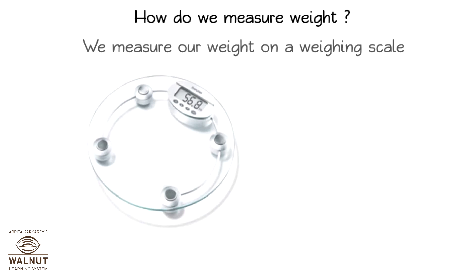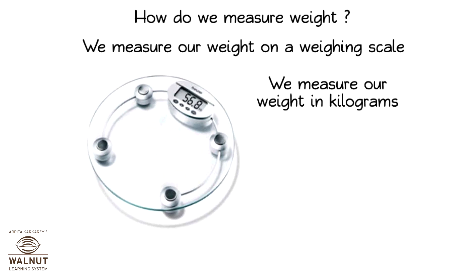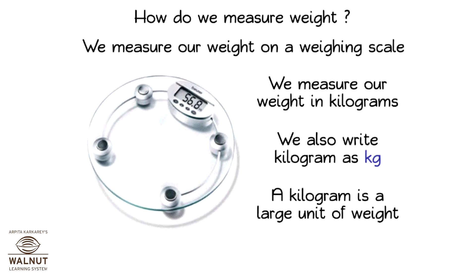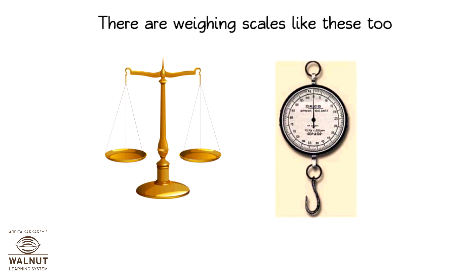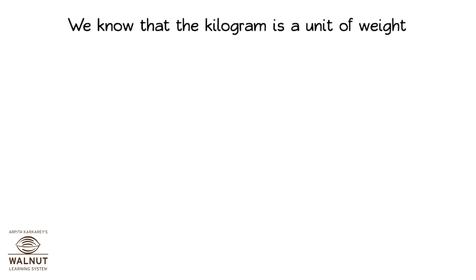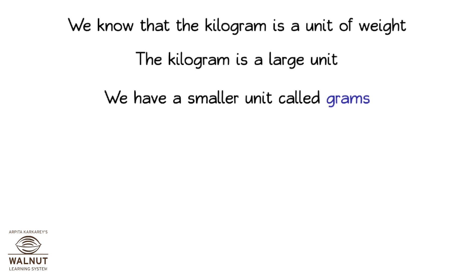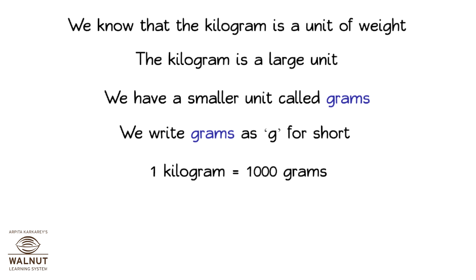How do we measure weight? We measure our weight on a weighing scale. We measure weight in kilograms, also written as kg. A kilogram is a large unit of weight. There are different types of weighing scales. The kilogram is a large unit, and we also have a smaller unit called grams. We write grams as g for short. One kilogram is equal to one thousand grams.